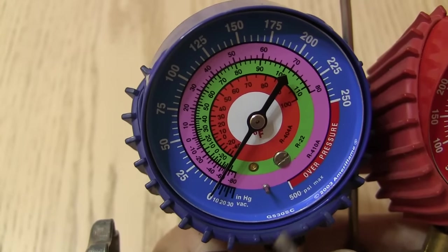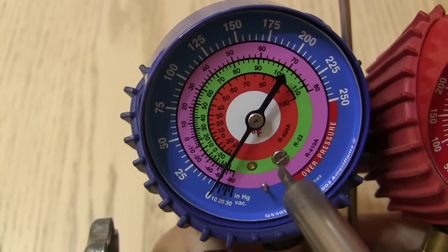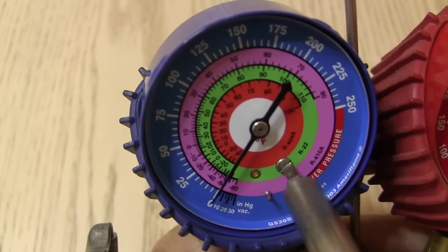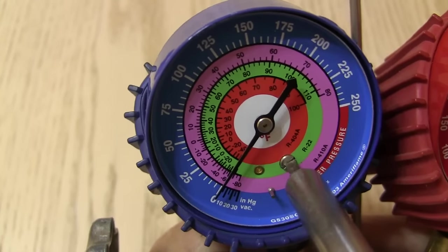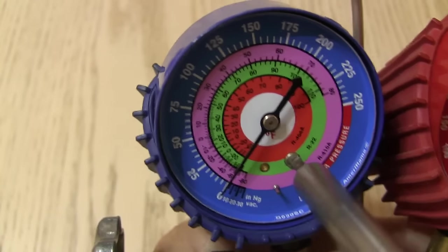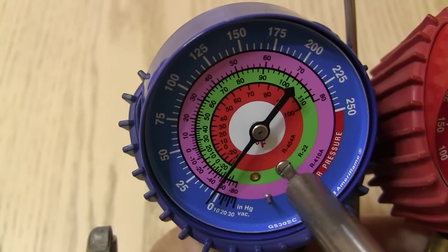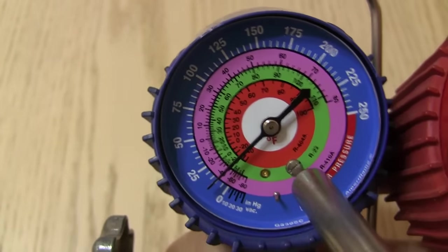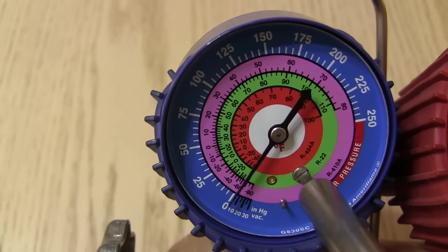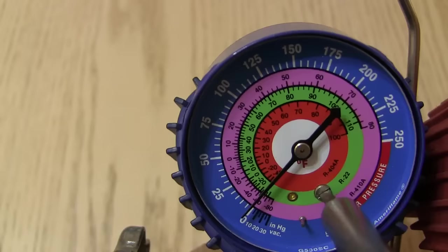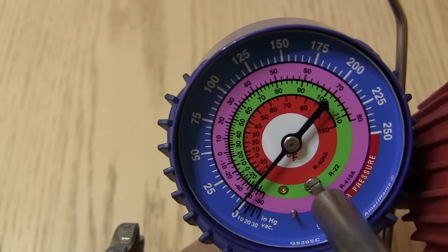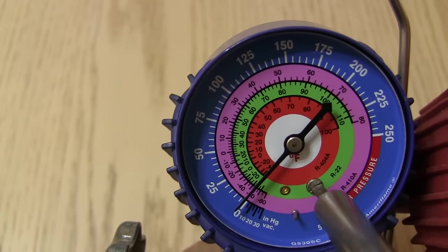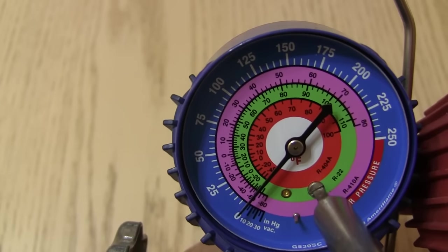Now, we can take a screwdriver and make the adjustment right here on this adjustment screw. And when we turn it, you'll be able to see how the needle can move around. So as you can see, what you got to do is adjust it to zero just to get these things to zero out so that they are useful again.